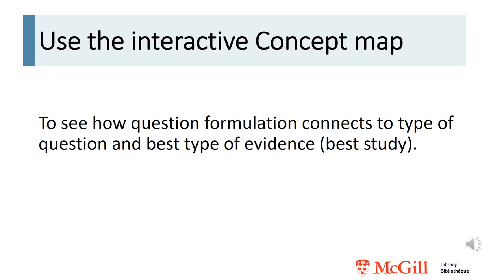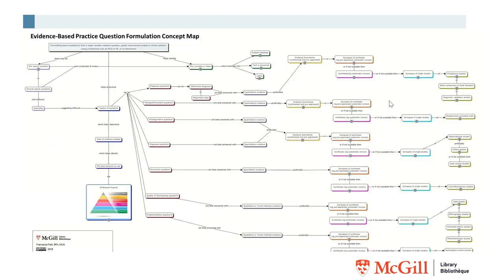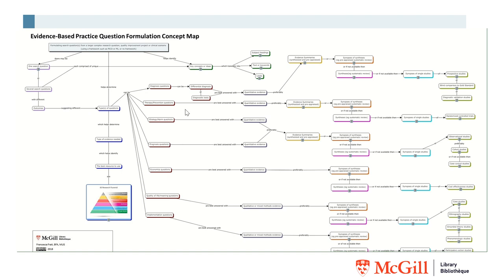You can use the interactive concept map to see how question formulation connects to type of question and best type of evidence or best study design. You start with your research question or clinical scenario, and as you can see, you may have more than one search question — each one might have a different outcome. The type of outcome leads you to determine what kind of question you're asking, and from there you can follow along until you discover what is the best evidence to answer your question. The map is interactive: you can click at each point and it will take you to a list of McGill databases where you can find this type of evidence.